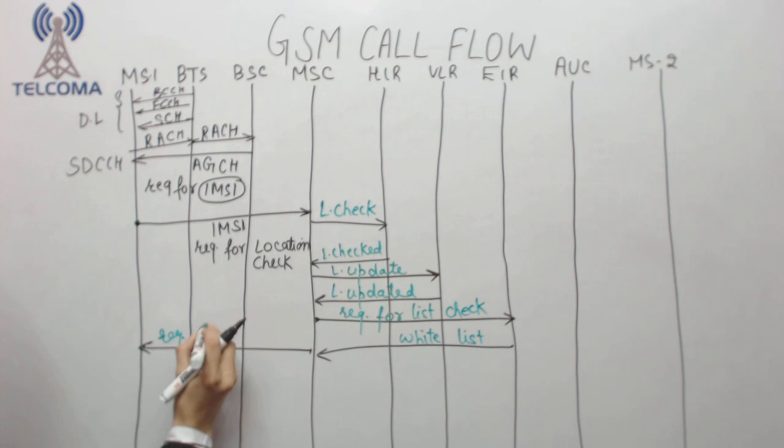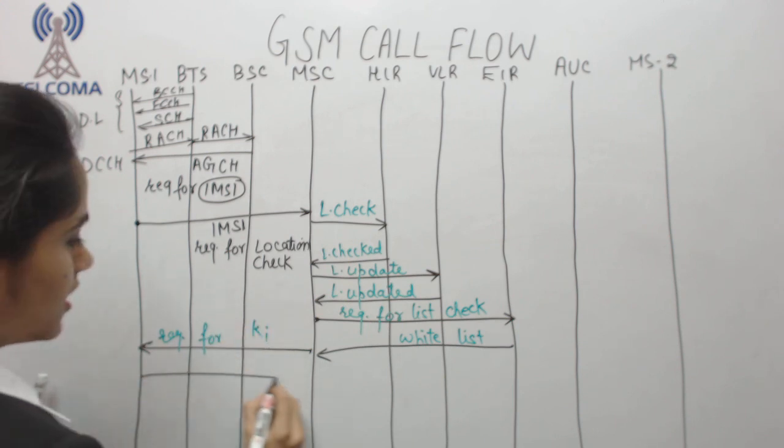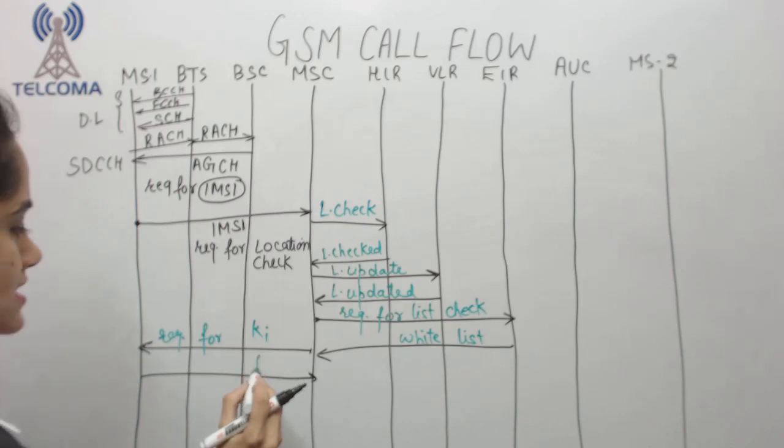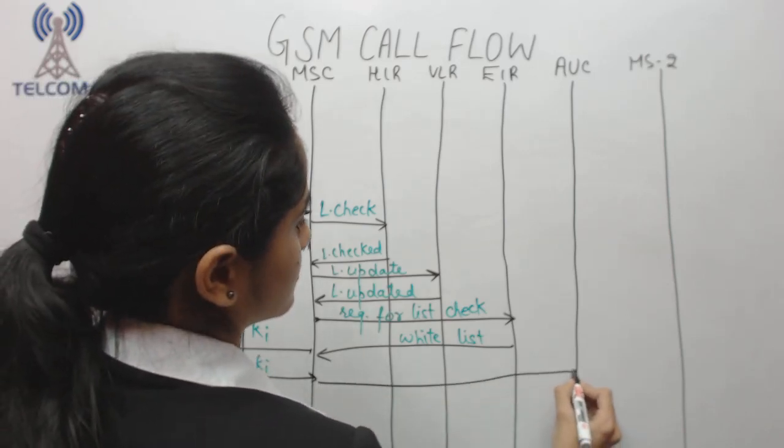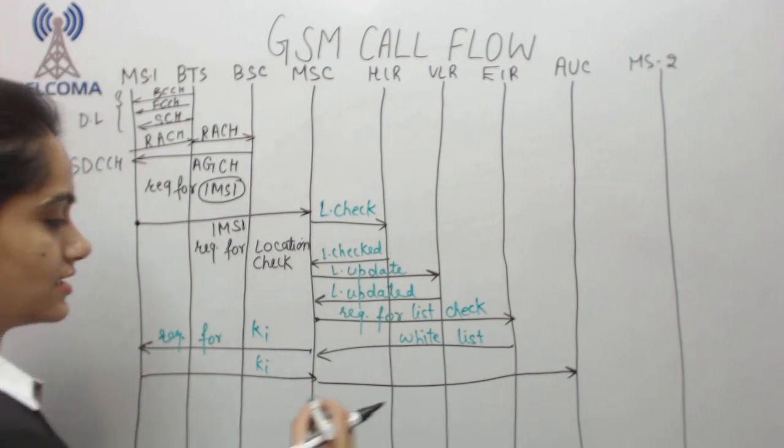MSC will communicate with mobile station with a request for Ki. Ki is an authentication key which is saved in the SIM card. Mobile station will send this Ki and this will communicate with authentication center.